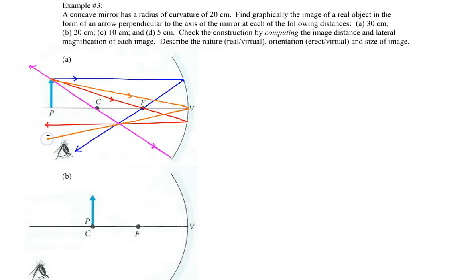You'll see that all four rays intersect at the same point. All this light emanated from the top of this arrow, and now the top of the arrow is below the principal axis, which means it's inverted. The image is inverted, it is smaller than the original object, and it's a real image because all these rays intersect at an actual place in front of the mirror.